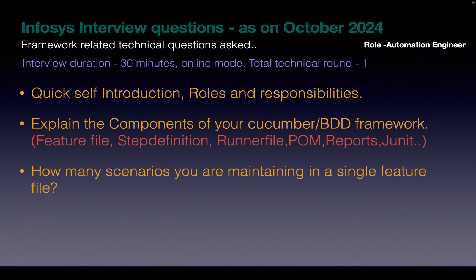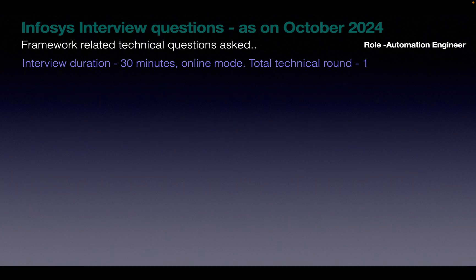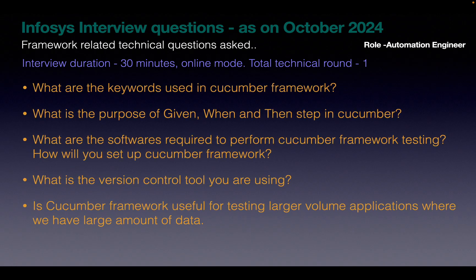Also, this interview is for only 30 minutes and the mode is online. The next question: what are the keywords used in Cucumber framework? There are different keywords like given, when, then, and background, scenario, scenario outline — whatever keywords you are aware of, you can explain. The next question is: what is the purpose of given, when and then steps?